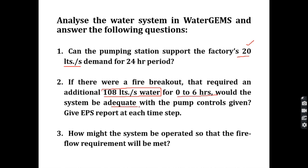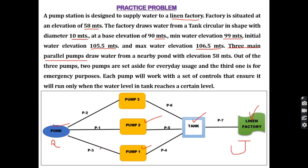Second, if there is a fire breakout requiring an additional water demand for 0 to 6 hours, would the system be adequate with the given pump controls? For this, an EPS — extended period simulation — report for 0 to 6 hours is needed. Third, how might the system be operated so that the fire flow requirement will be met if the current controls are insufficient?